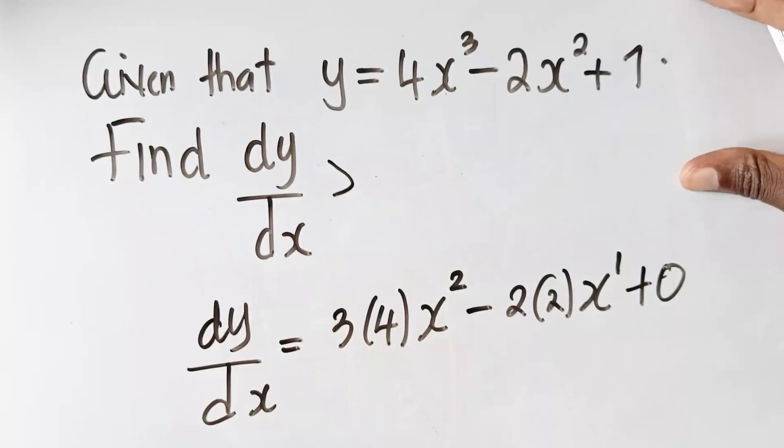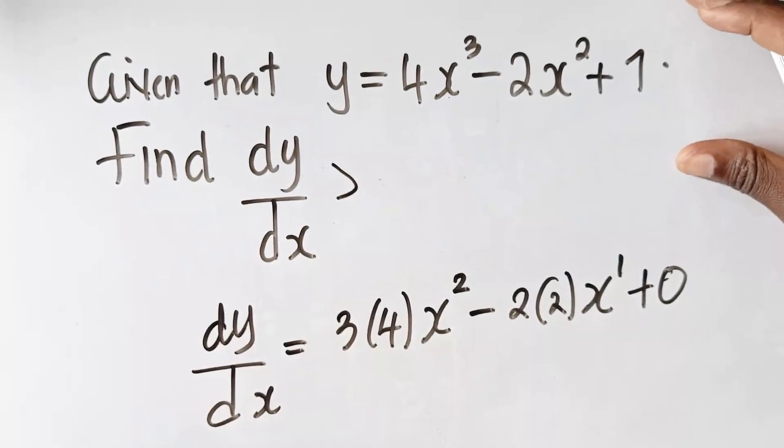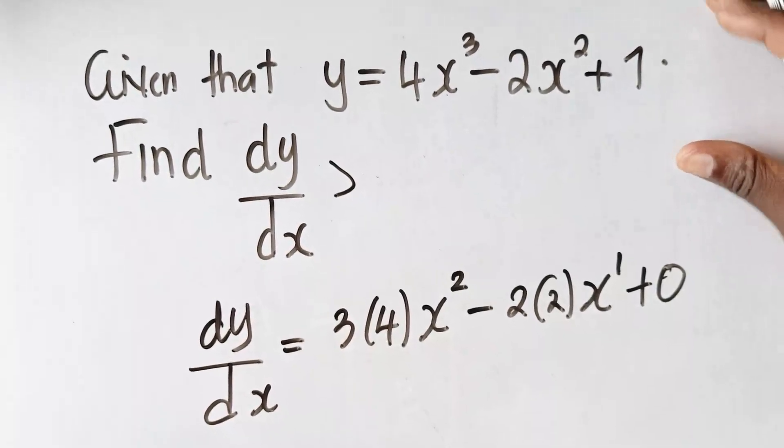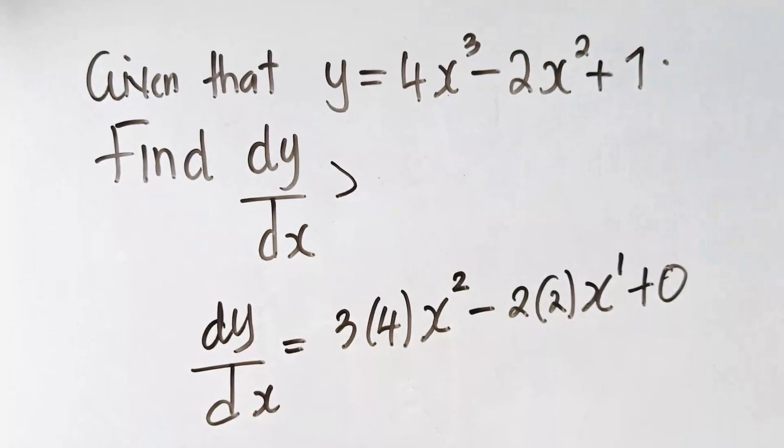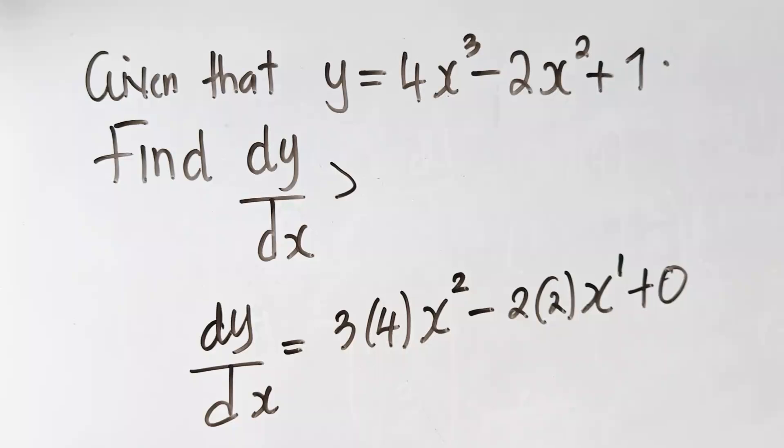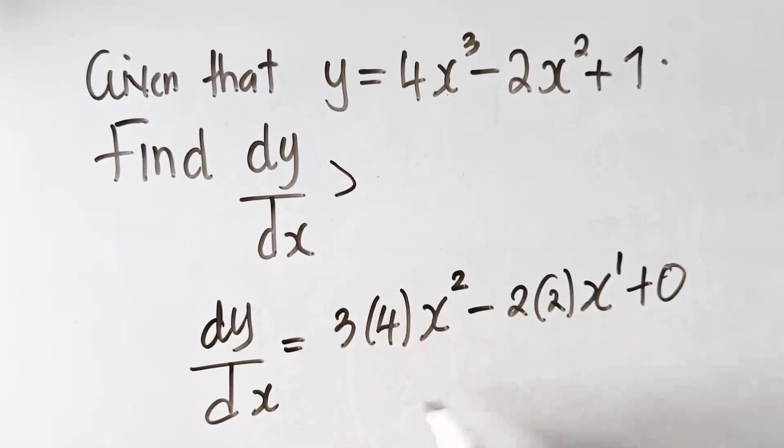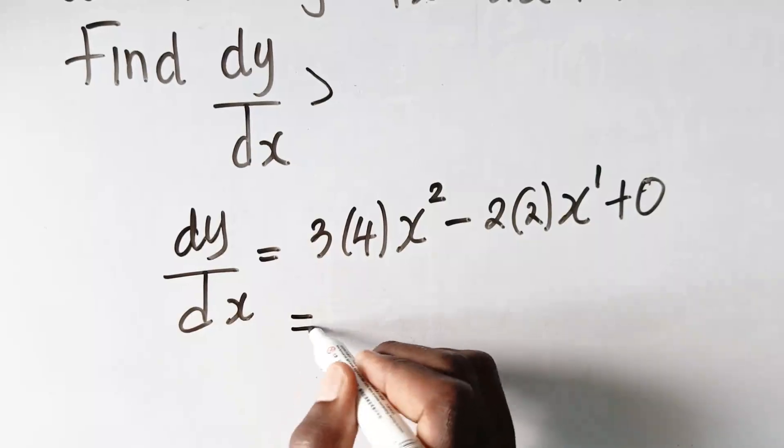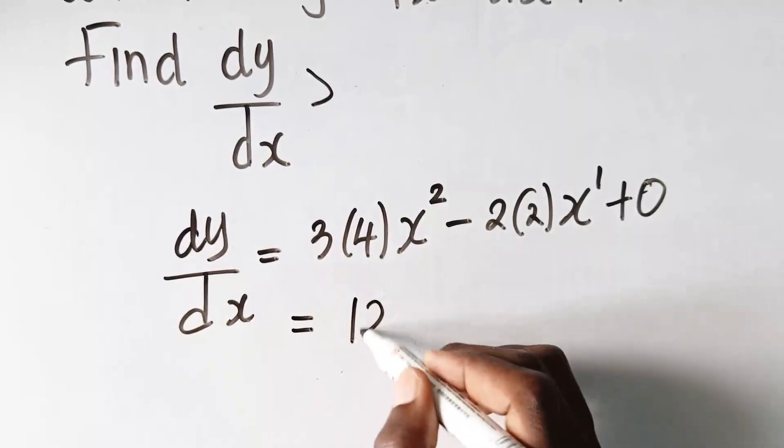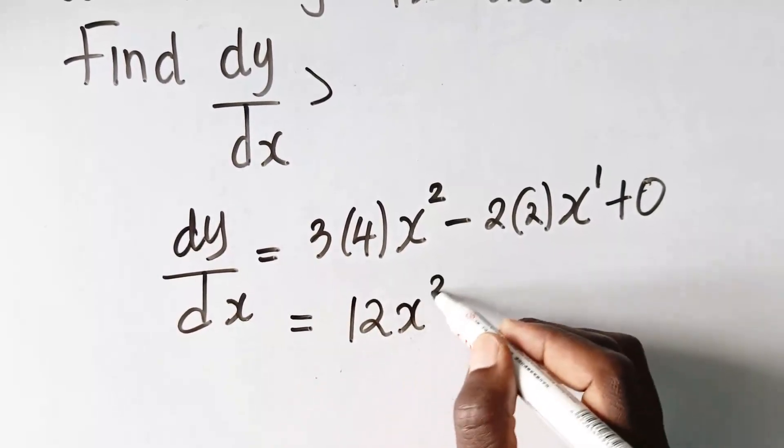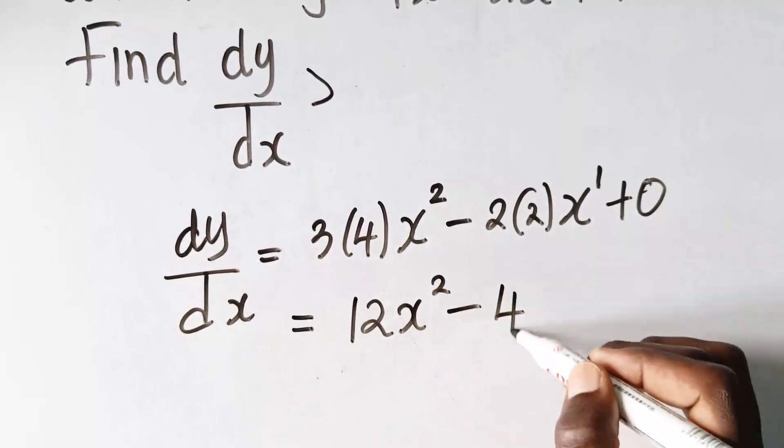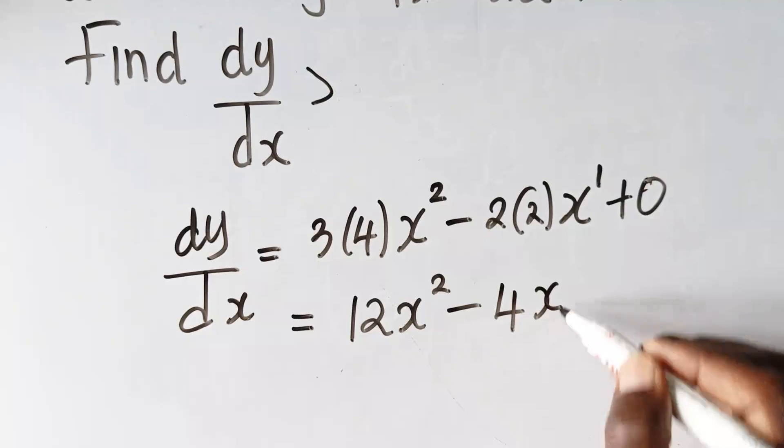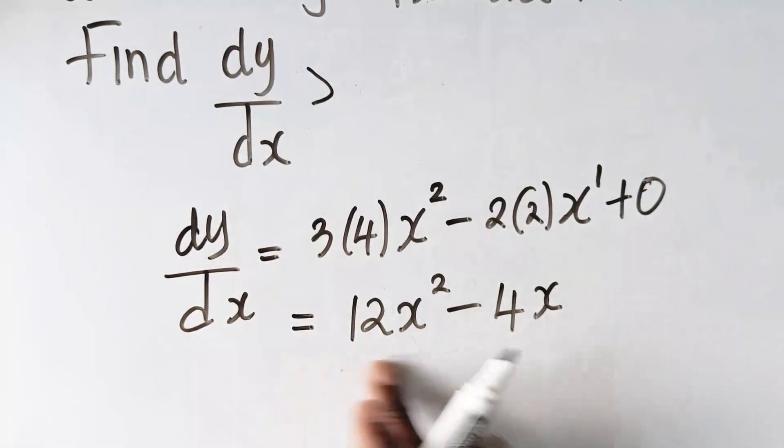Any constant, be it 1,000, 1,000,000, 20,000,000, it's still 0. Now, let's evaluate this. I think we are even done. So, what do we have? We have 12x squared minus 4x. This is our dy dx.